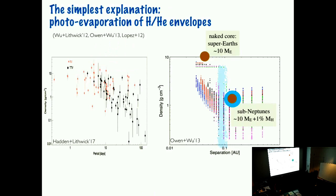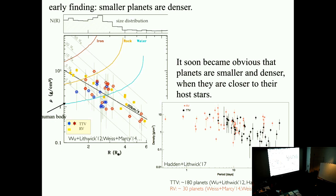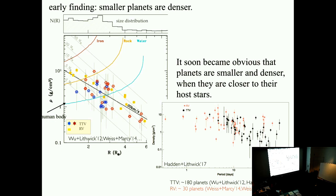A question: in the TTV results, the fact that at long periods planets seem to have lower density — is this an observational bias? Because at long periods the planet transits fewer times, so transit timing precision is less good, and you can only do TTV precisely for big planets, and therefore you only catch really big, fluffy, lower-density ones. That's a fair point — this part may be a bias. But the RV data, which don't have the same selection effect, shows the same trend. So accounting for that bias, the trend is real.